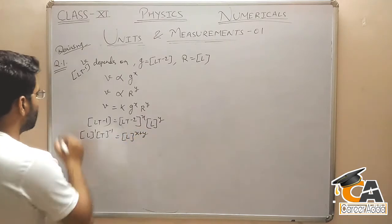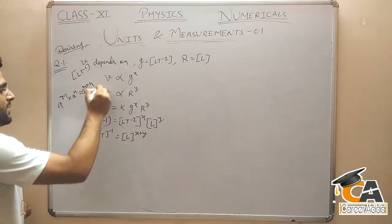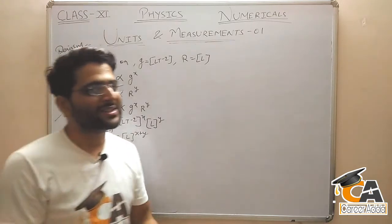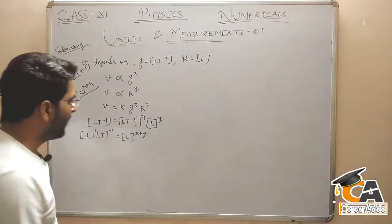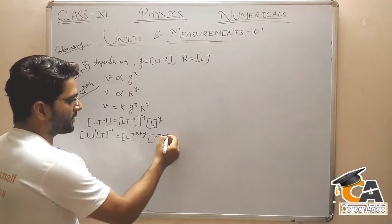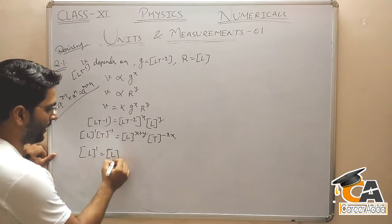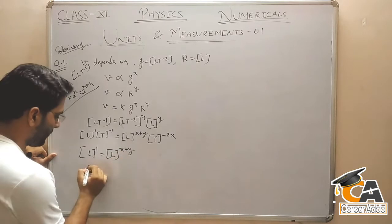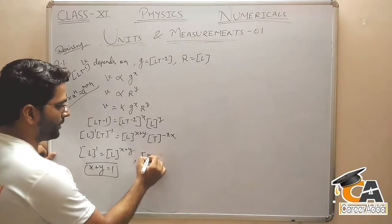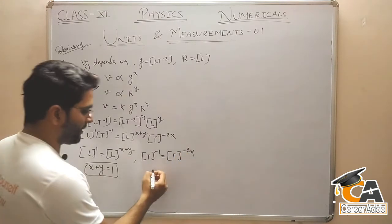So here we have X plus Y for L terms. For multiplication of powers, we add them. So X plus Y here, and for T we have T to the power minus 2X. Now we need to separate: L to the power 1, L to the power X plus Y, then X plus Y is equal to 1. Next, T to the power minus 1 is equal to T to the power minus 2X.